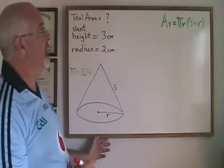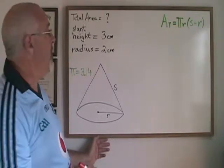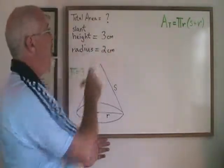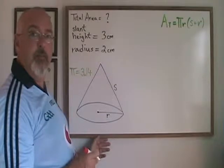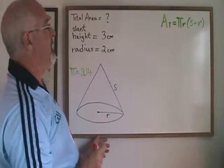Let's look at an example of finding the total area of the cone when we are given the slant height and the radius. My slant height is three centimeters, my radius is two centimeters.